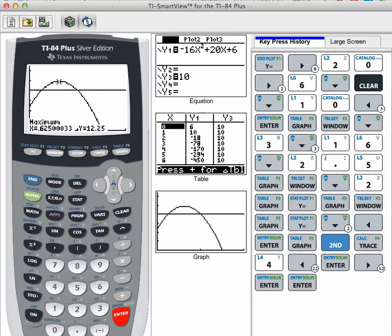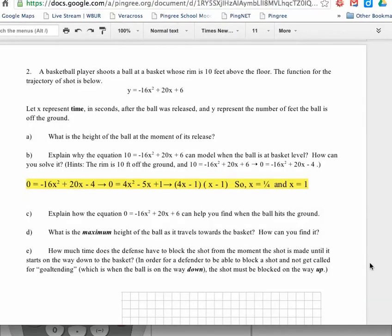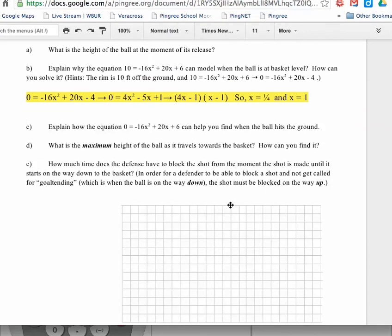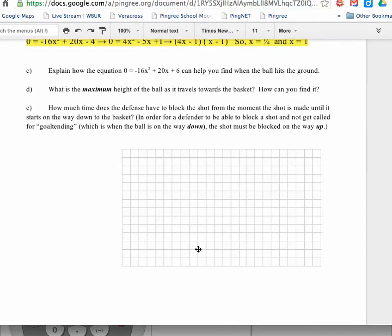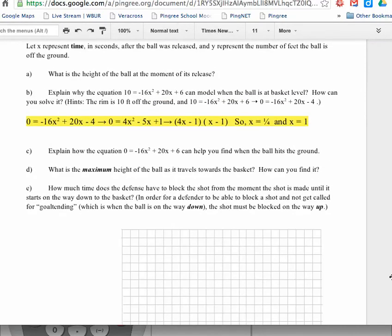I think we are done. You're going to want to sketch a graph and label it. Make sure you have a window that's clearly labeled. Don't just draw an upside-down parabola and leave it at that. Label the window. Good luck. Thanks a lot.